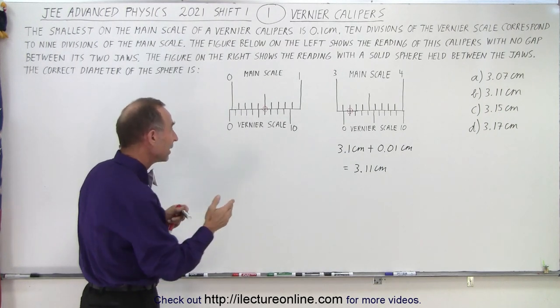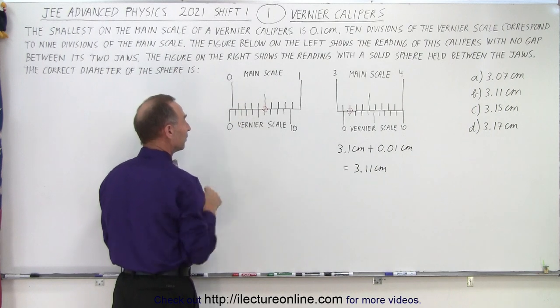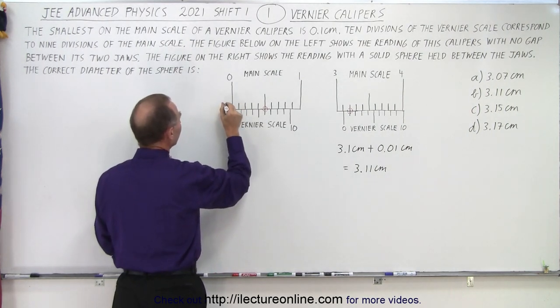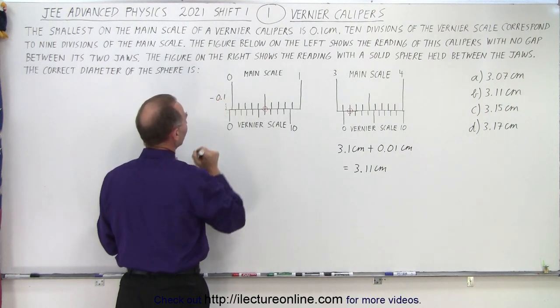Now the zero reading is a little tricky because it's on the negative side of zero. Notice it's to the left of zero. So essentially when you think about it you can say that this is like to the right of a negative 0.1 centimeter.